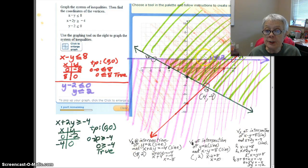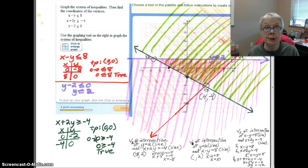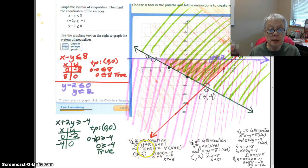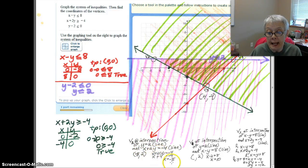V2 is at the intersection of the line Y equals 2 and the line X plus 2Y equals negative 4. So when I solve those two equations together, Y is already 2, so all I have to do is substitute 2 for the Y and I get X is negative 8, so my first vertex is negative 8, 2, and it's right there.